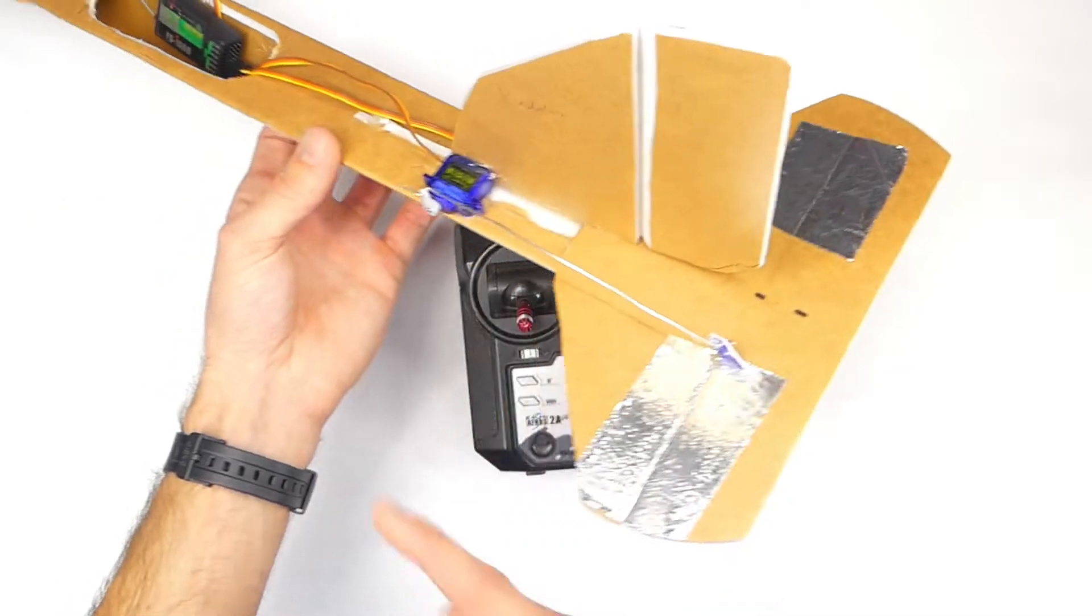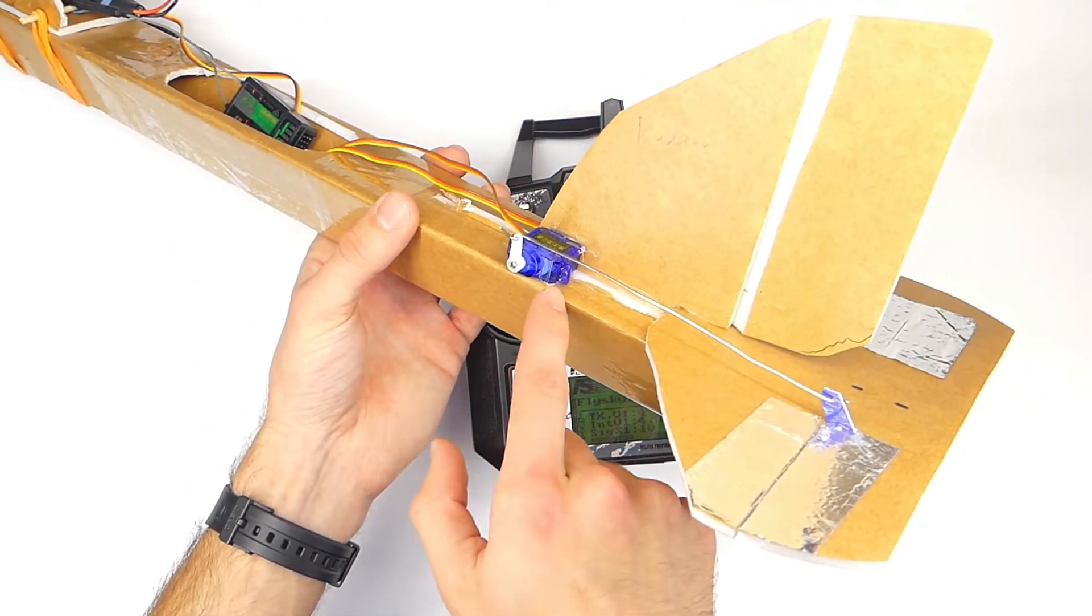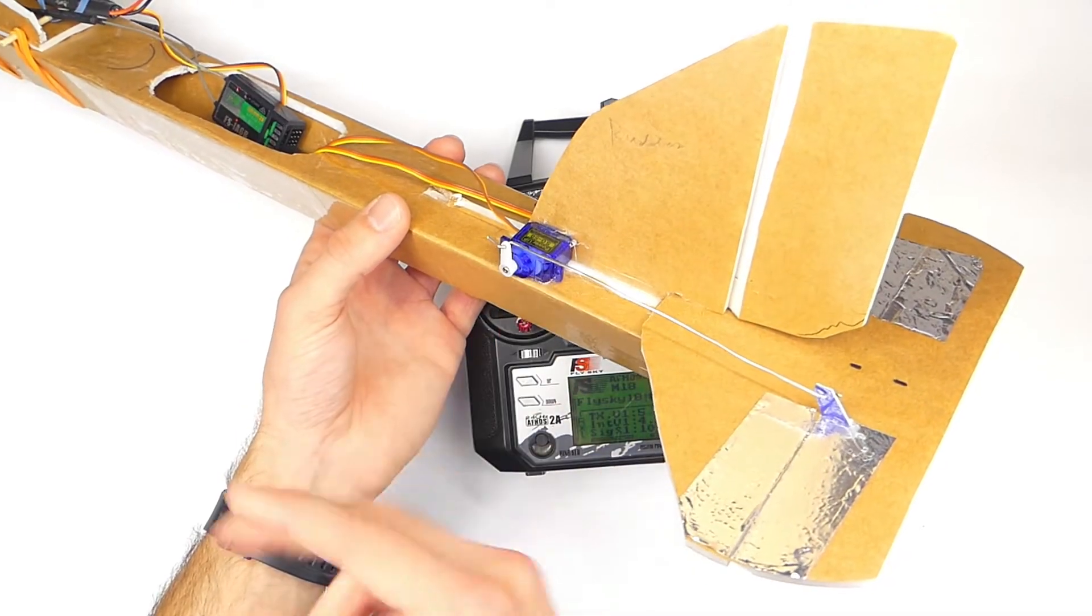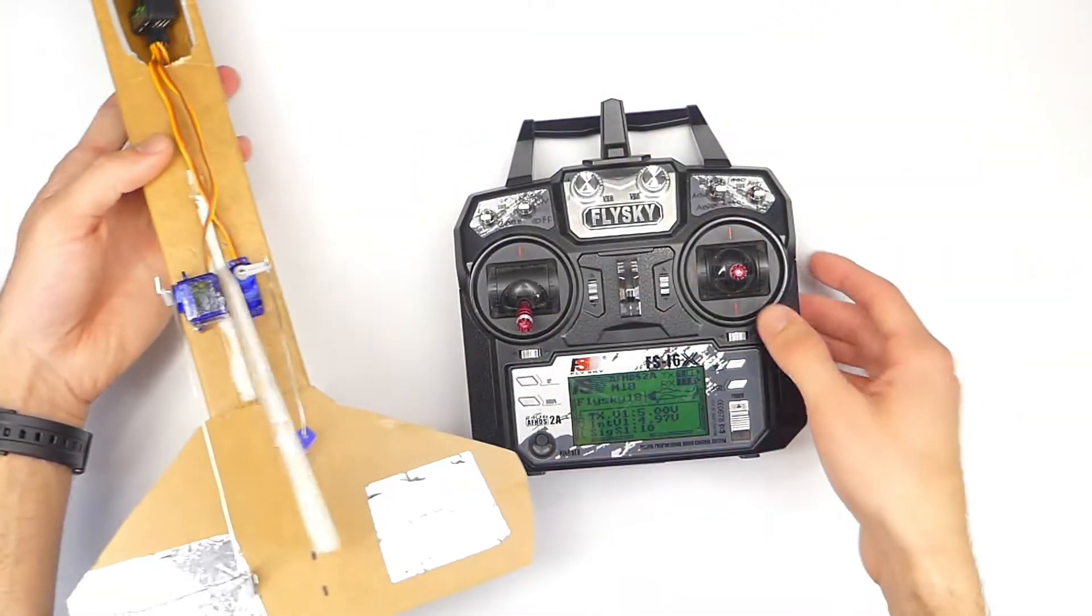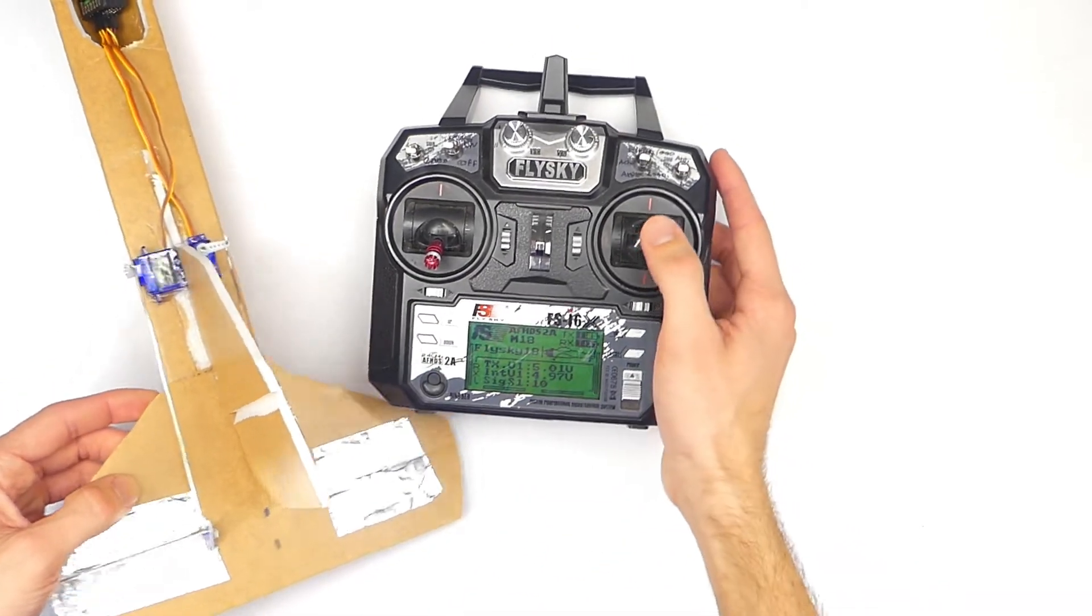What I could do is physically move the servo to a different position, basically turn the servo around, but it's glued in place and I don't want to do that. So what I'm going to do is go into my transmitter and reverse that channel. In this case, it's going to be channel 2.